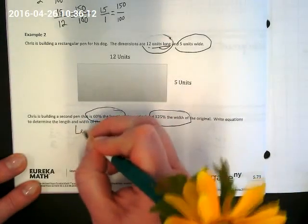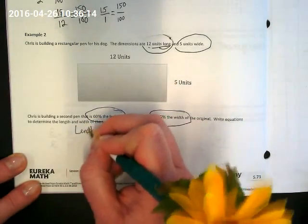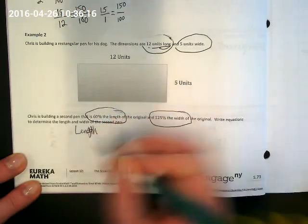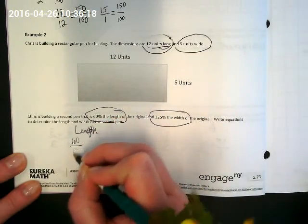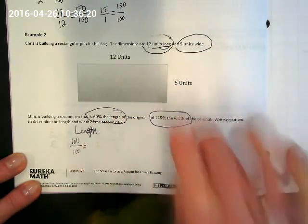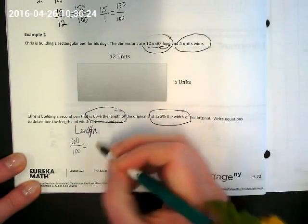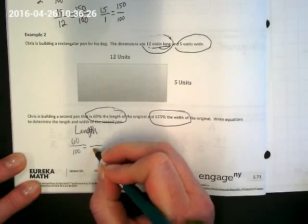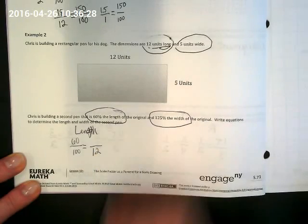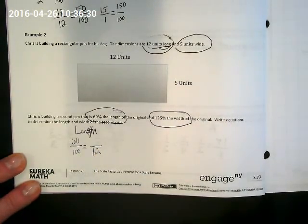Well, for the length we can do 60 over 100, and what is the original length? 12. The 12 original goes down with the 100. It matches the 100%. Can we cross multiply that and find it then?